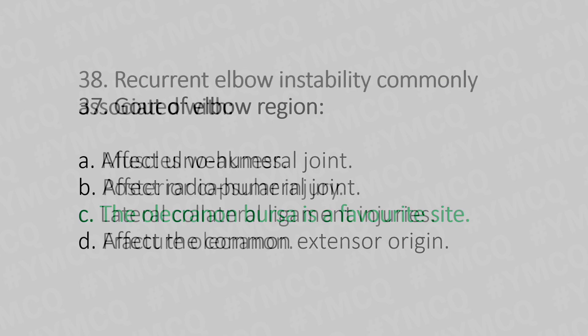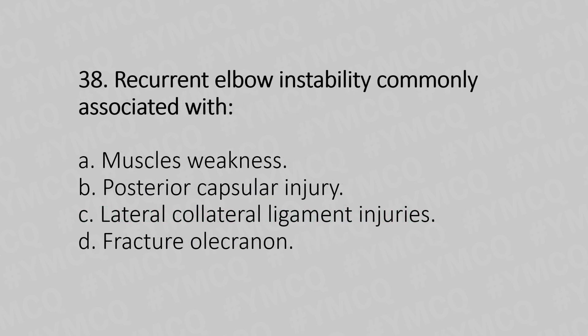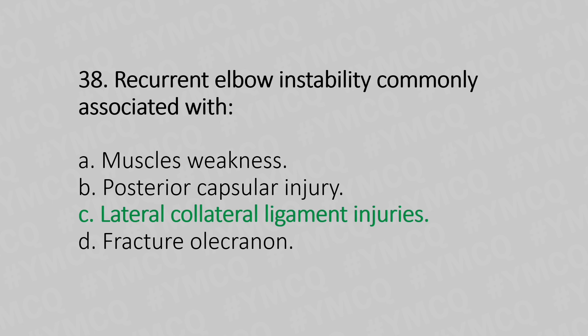Now let's move to question number 38. Recurrent elbow instability is commonly associated with: Option A, muscle weakness. Option B, posterior capsular injury. Option C, lateral collateral ligament injury. Option D, fracture of olecranon. And the answer is Option C, lateral collateral ligament injury.